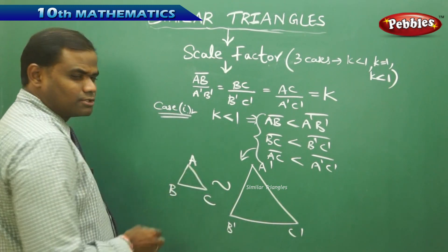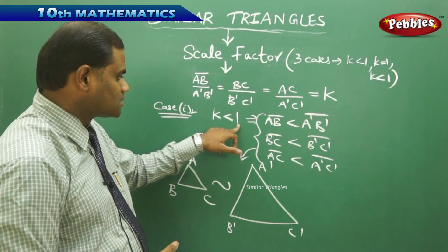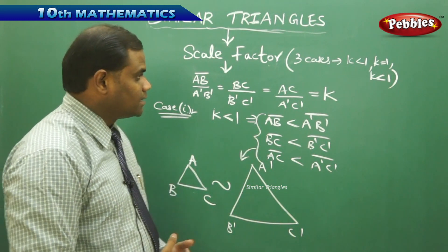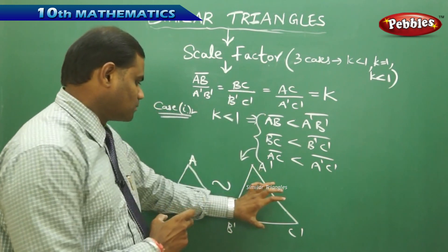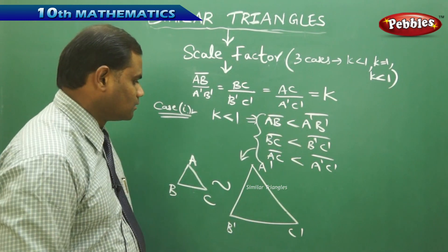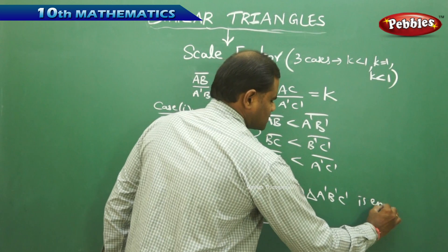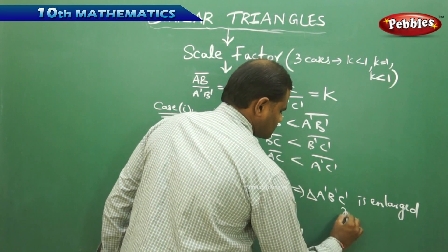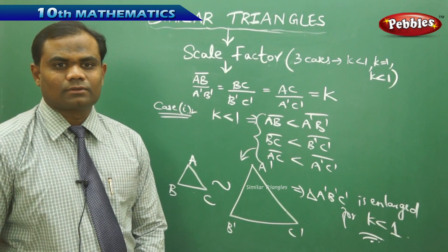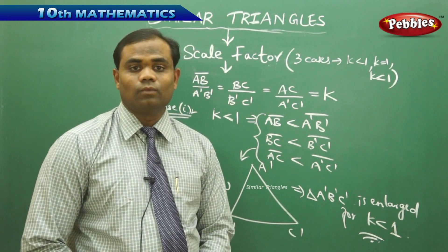In similarity, the original triangle is smaller than the enlarged triangle. Therefore, for k less than 1, the second triangle A'B'C' is enlarged. So we conclude Case 1: the second triangle A'B'C' is enlarged when k less than 1.